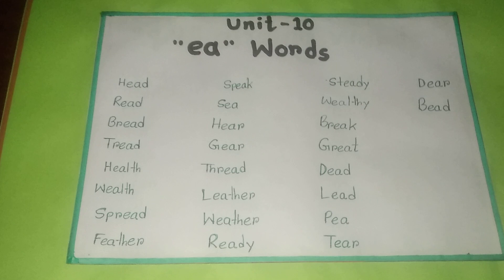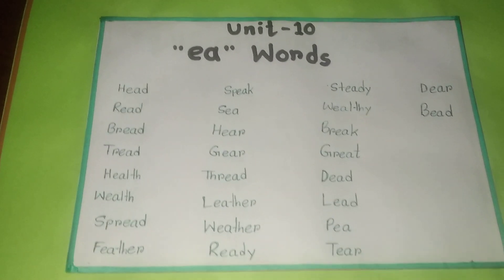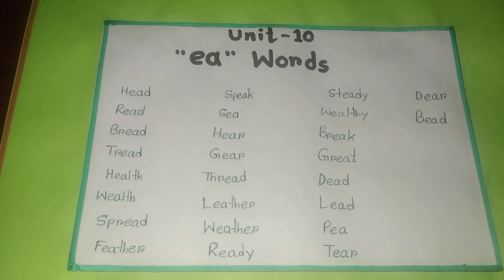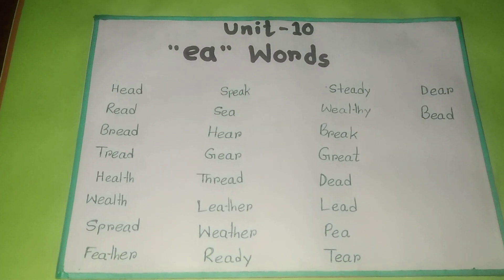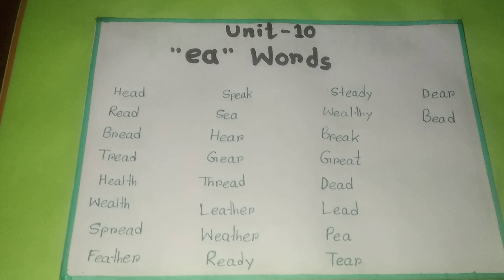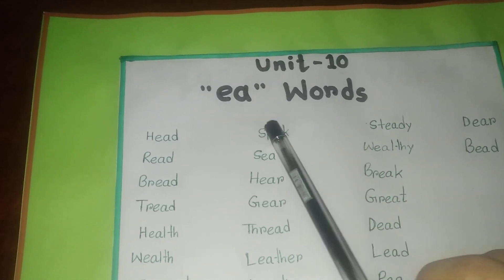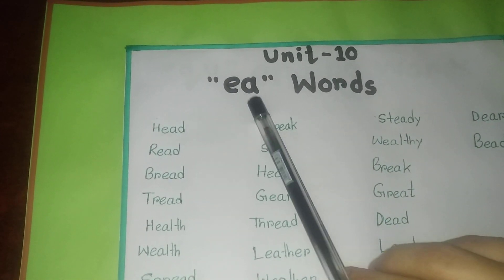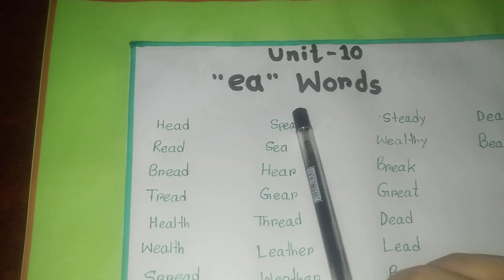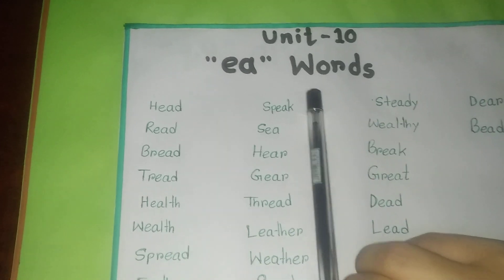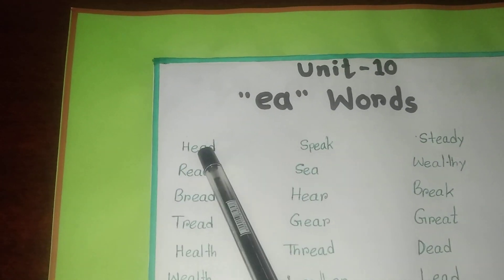Assalamualaikum, my dear students. How are you all? I hope you are all fine after the vacation. Today is your first class and I hope you have spent your day very nicely. So now come to your study. Today I will teach you about Unit Number 10. In this unit you will learn EA words — that means words which contain EA. Okay, let's start.